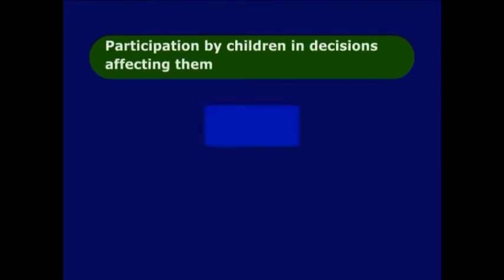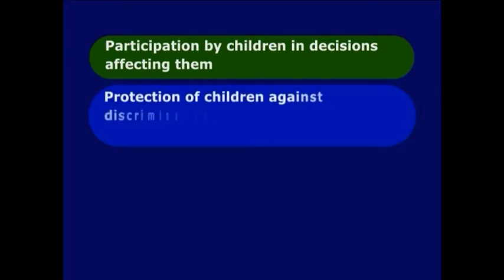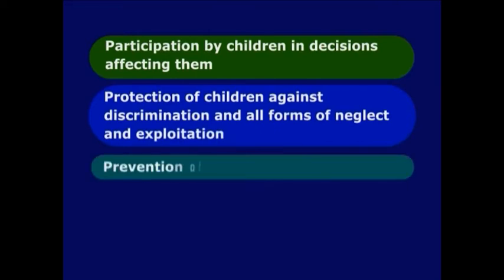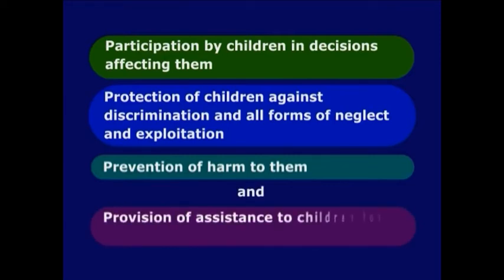The four Ps are: participation by children in decisions affecting them; protection of children against discrimination and all forms of neglect and exploitation; prevention of harm to them; and provision of assistance to children for their basic needs. For the purpose of the CRC, a child is defined as every human being below the age of 18 years unless, under the law applicable to the child, majority is attained earlier, according to Article 1.